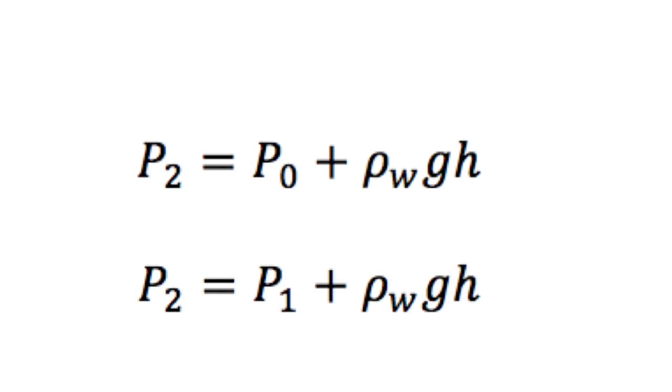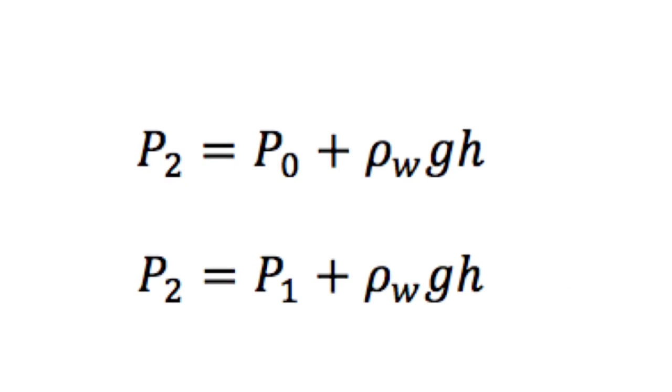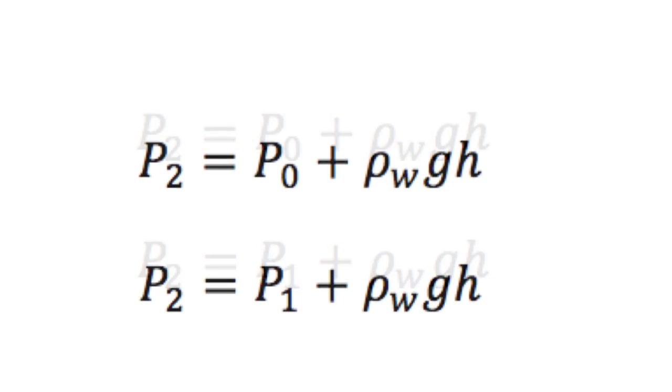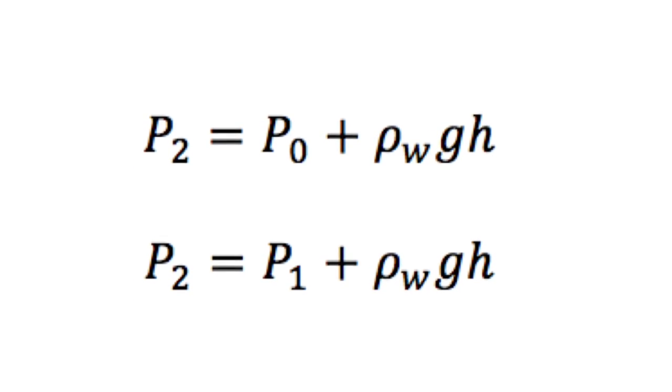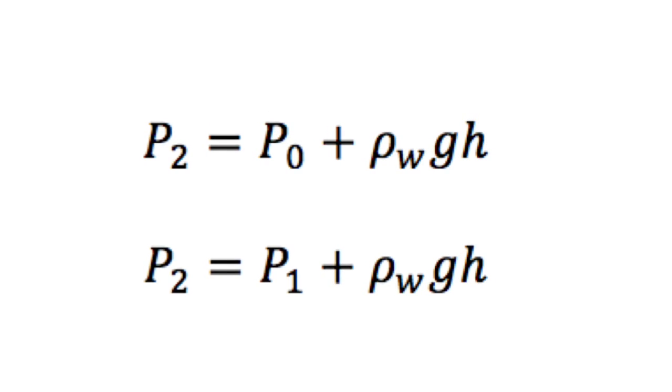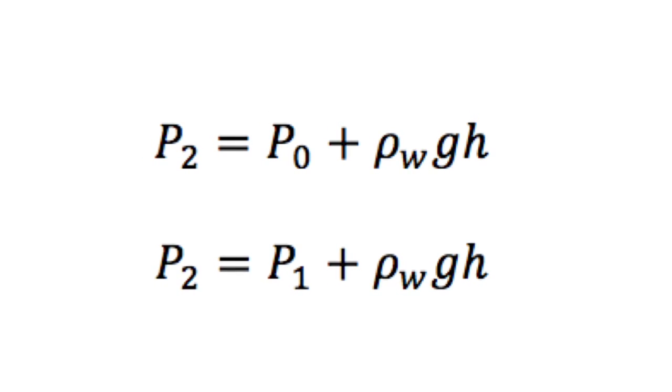P2 can be found using the principles of fluid statics using the following formulas. And since the air coming out of the hairdryer was at atmospheric pressure, this results in letting P1 equal to P0.